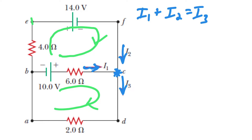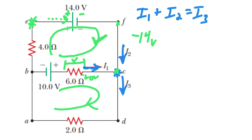Choose a starting point — I'm going to choose point E. I'm going to head in the direction of my loop. As I move in this direction I'm going from the positive end of the battery to the negative end of the battery, so I'm decreasing voltage. I'm going to go negative 14 volts. Then I keep going through the six ohm resistor. Since we're going against the current, we're going from a low potential to a high potential, so we're increasing potential — that gives a positive voltage across the six ohm resistor.